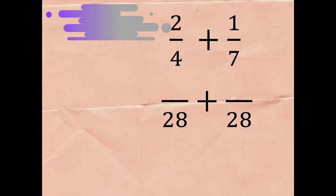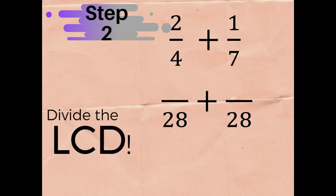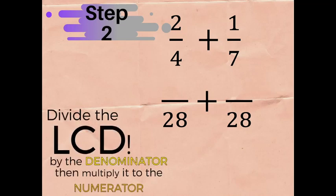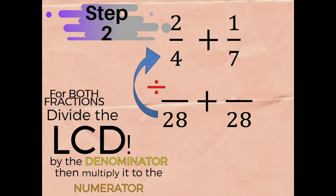Now, we put 28 as their LCD on the bottom part of the original fractions. Step two is actually where the butterfly method happens. We divide the LCD by the denominator, then multiply it to the numerator. As you can see, it looks like it forms the wings of a butterfly — that is the reason why it is called the butterfly method.